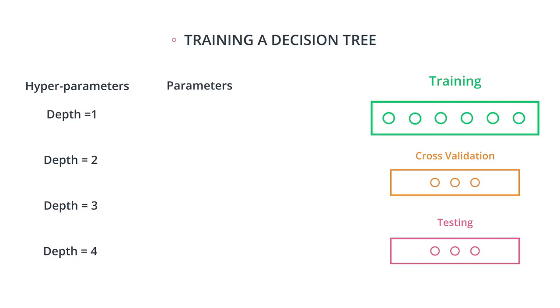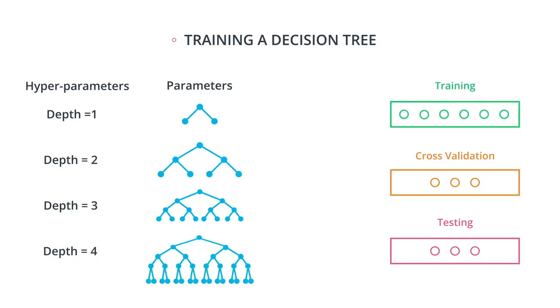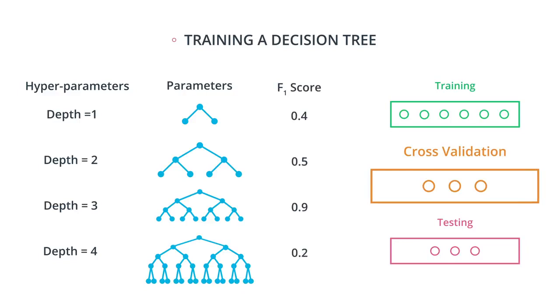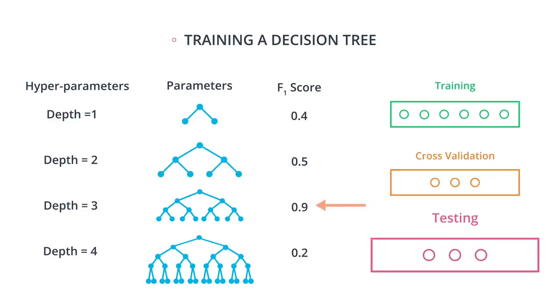We use the training data to train a bunch of trees of depth one, two, three, and four. So the parameters here are the thresholds in the leaves and the nodes. Then we take the F1 score and calculate it on the cross-validation set on each of these models. Then we pick the one that did the best. And finally, with the testing set, we make sure this model is good.